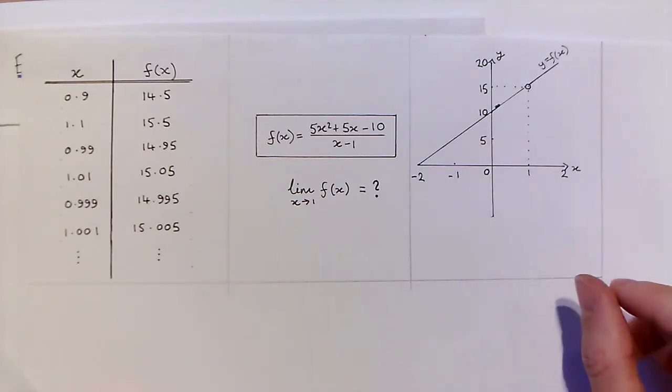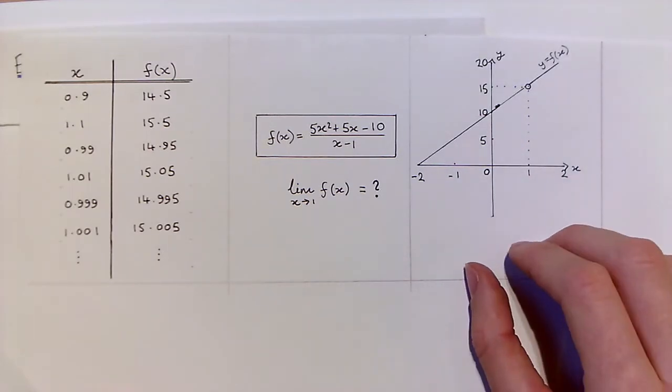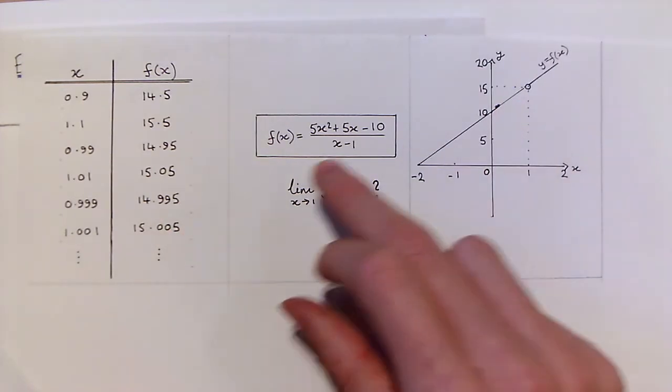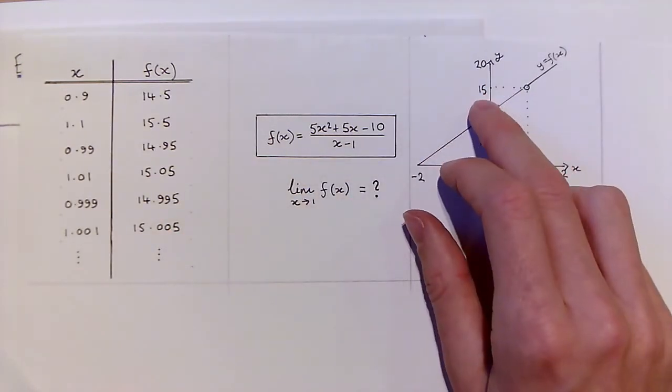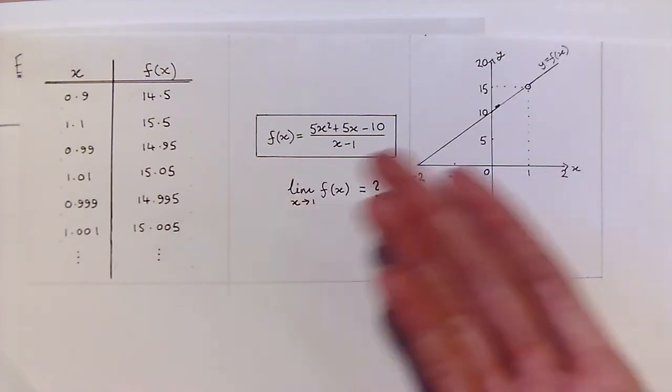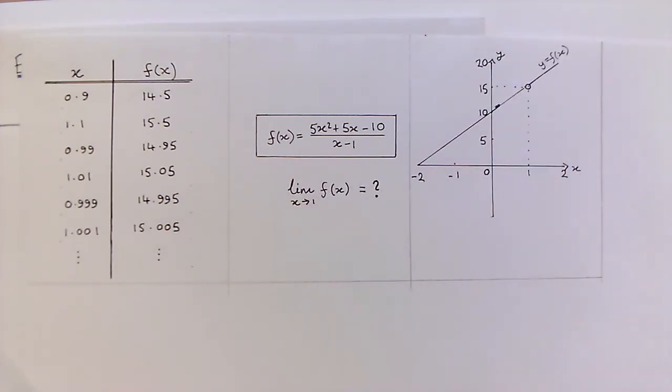Or tentatively, we could plot some points and have an attempt at drawing a graph. And as you can see, both of these approaches seem to indicate that the limit is 15. So these sorts of approaches lead us to suspect that the limit is 15.